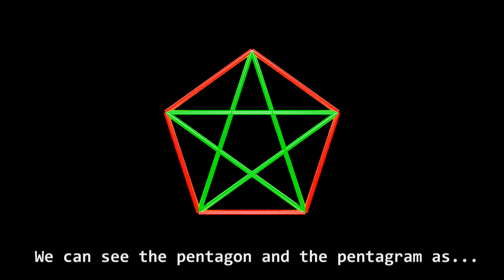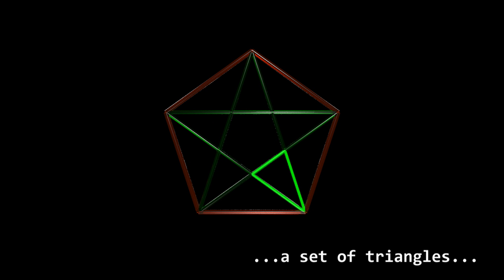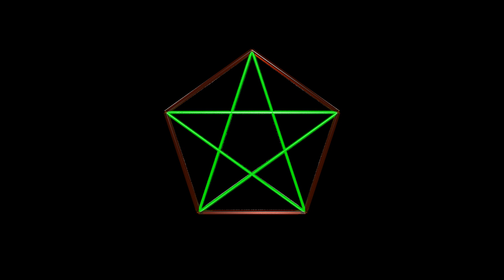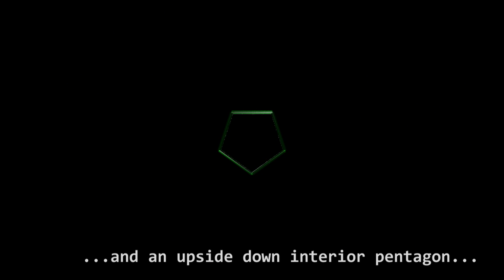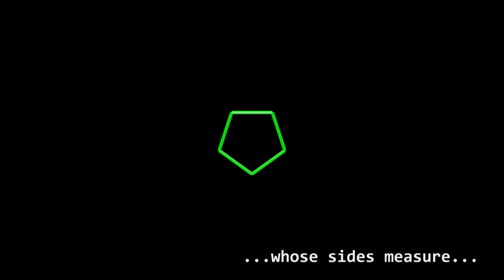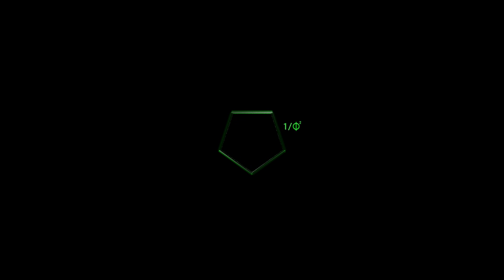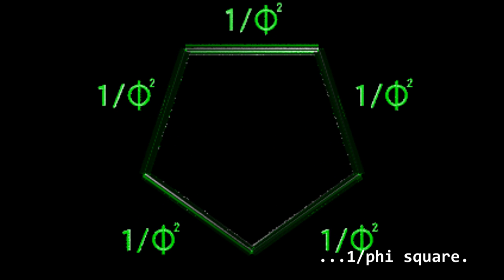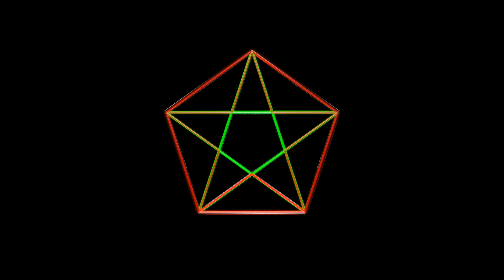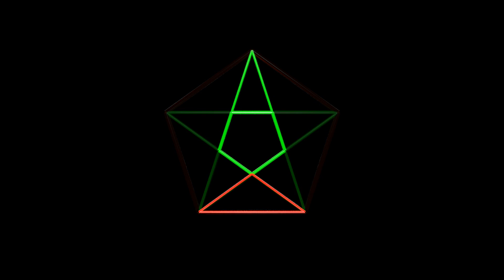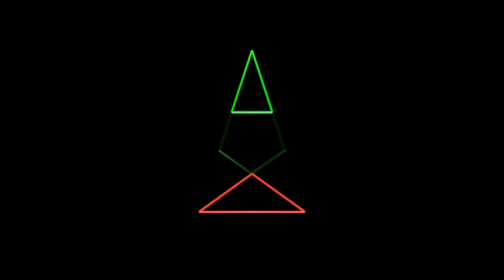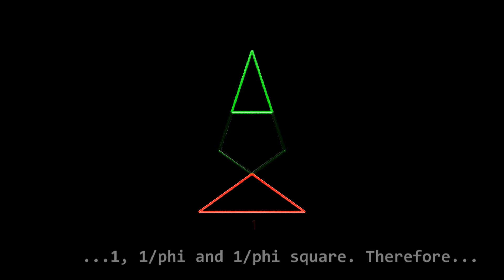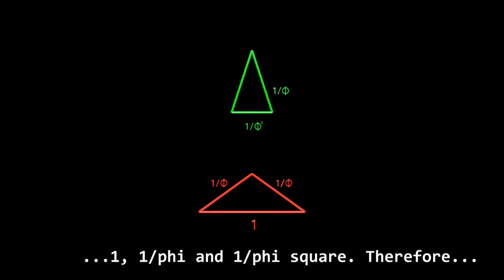We can see the pentagon and the pentagram as a set of triangles, and an upside-down interior pentagon, whose sides measure one divided by Phi squared. And the triangle sides measure one, one divided by Phi, and one divided by Phi squared.